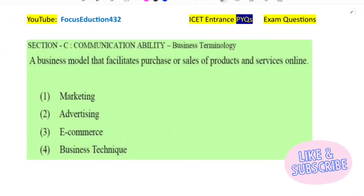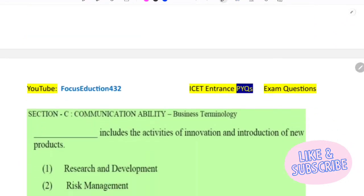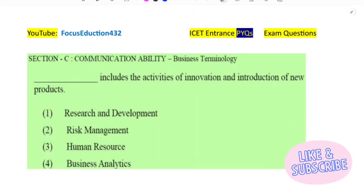Then the next question. A business model that facilitates purchase or sales of products and services online. Nowadays we are having this thing, we can purchase, we can sell. How? Online. What is this? E-commerce. E-commerce means purchasing and selling online. This is possible. How e-commerce is possible? It is only possible because of the internet. Without internet, this e-commerce is not possible.